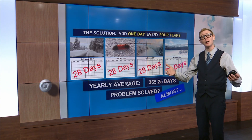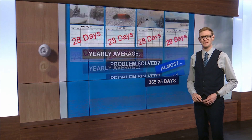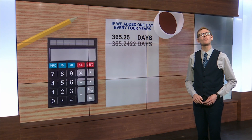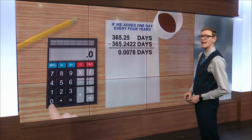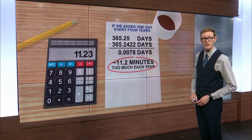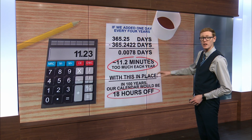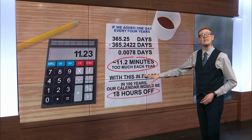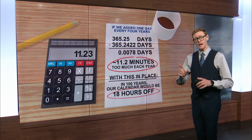Problem solved, right? Almost. There is still a rounding error that gives us 11 extra minutes every year at that rate. After 100 years, our calendar would be 18 hours off.